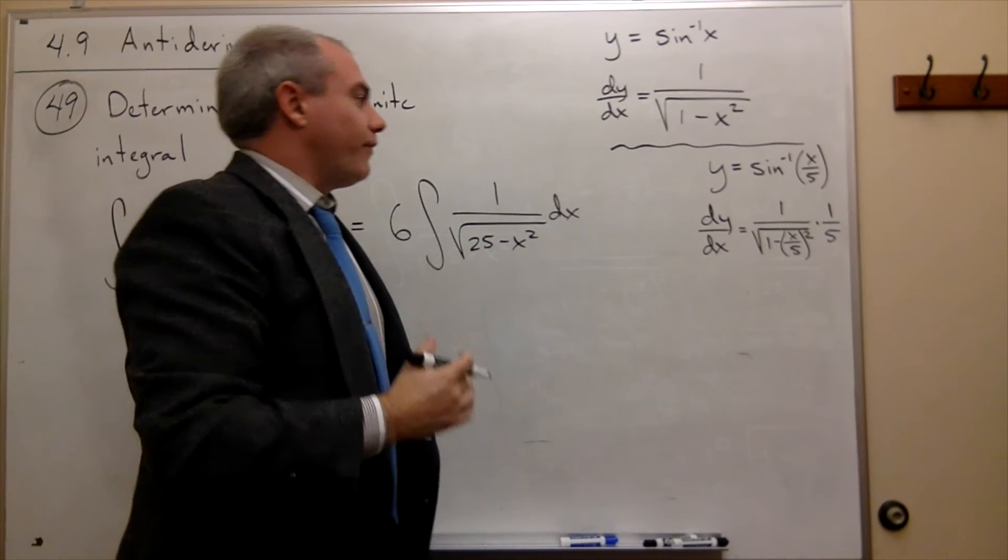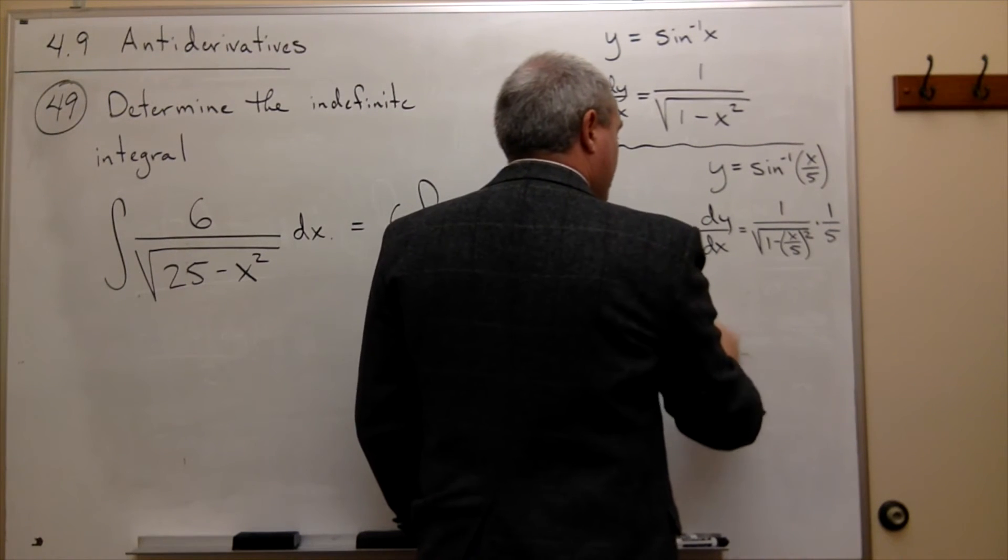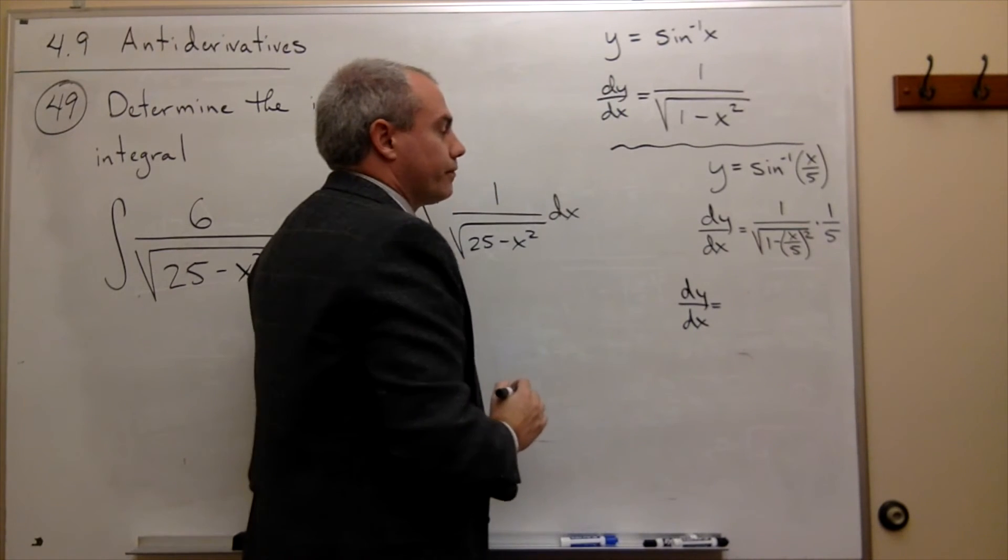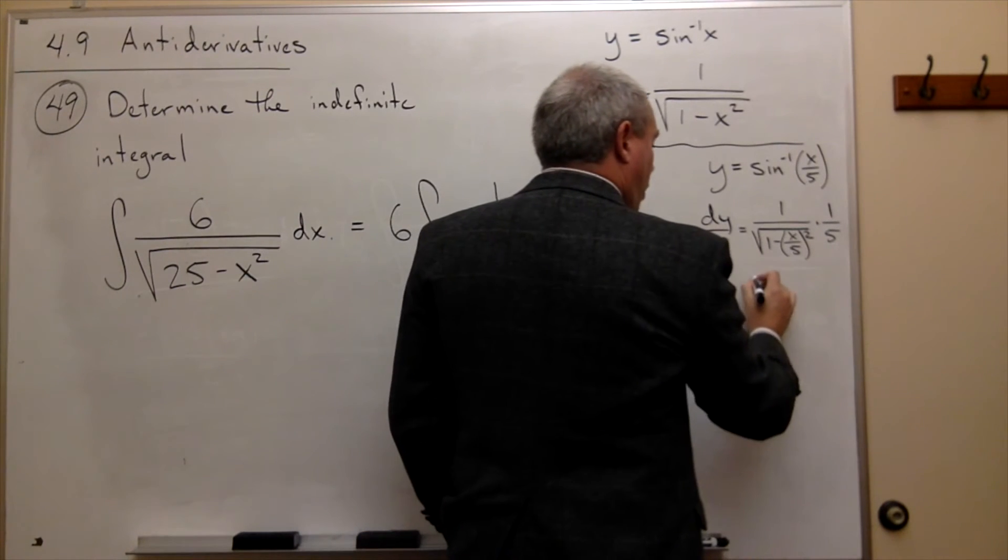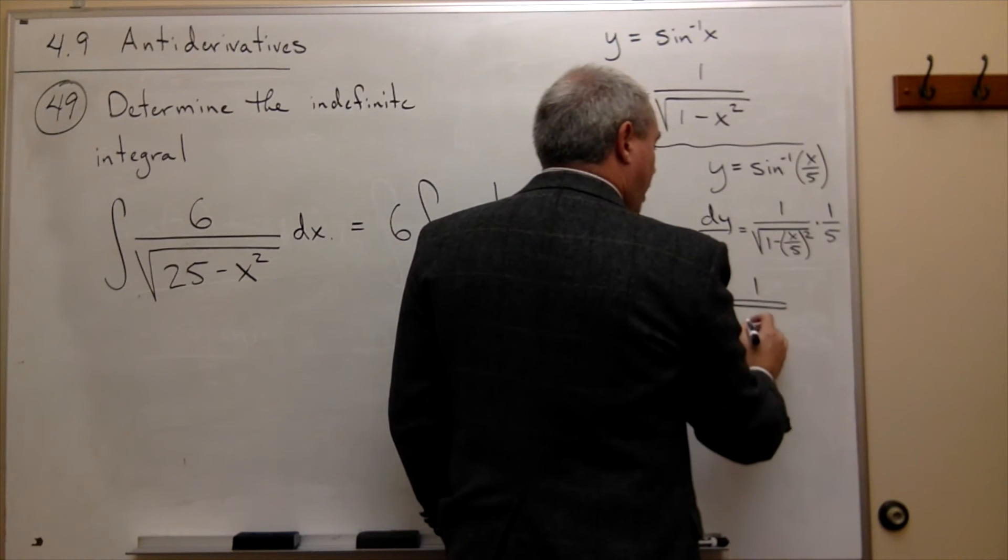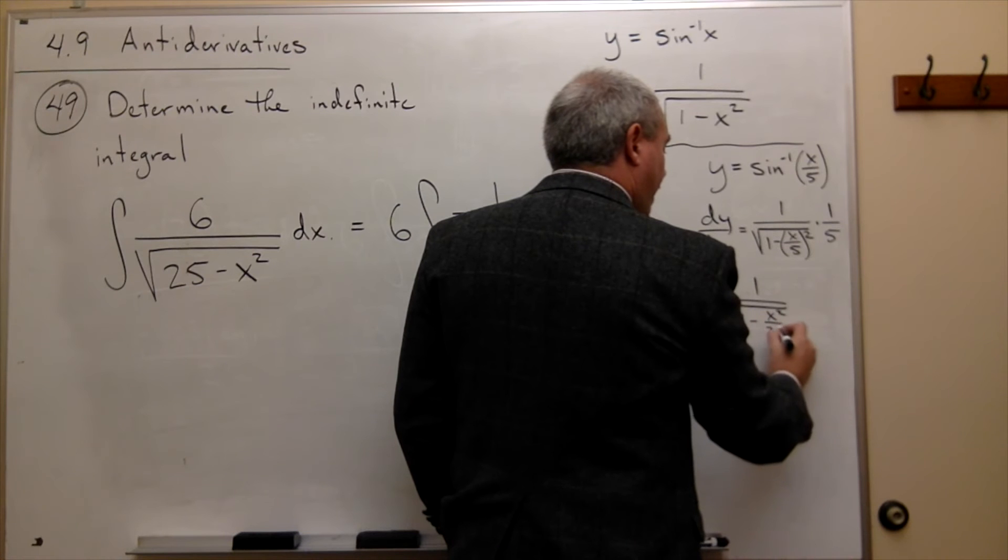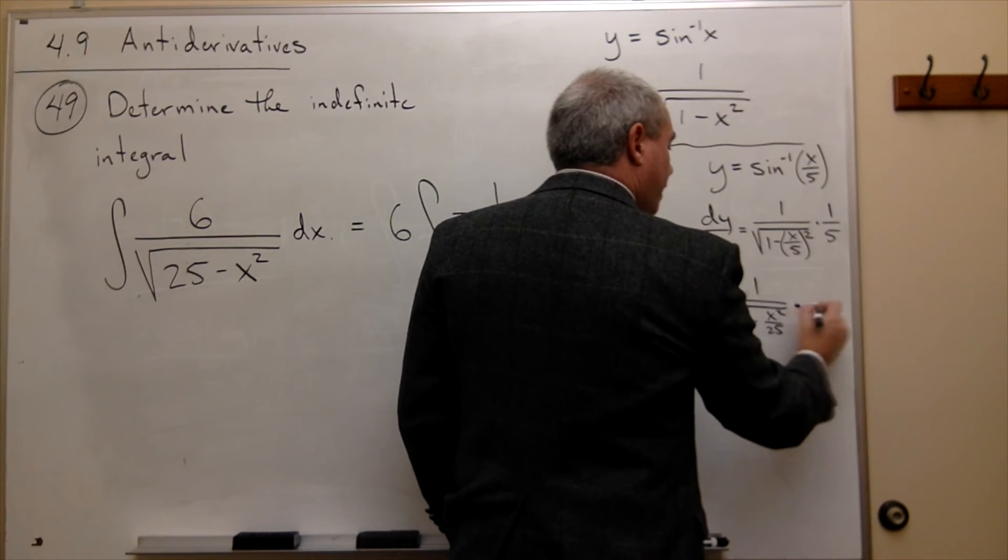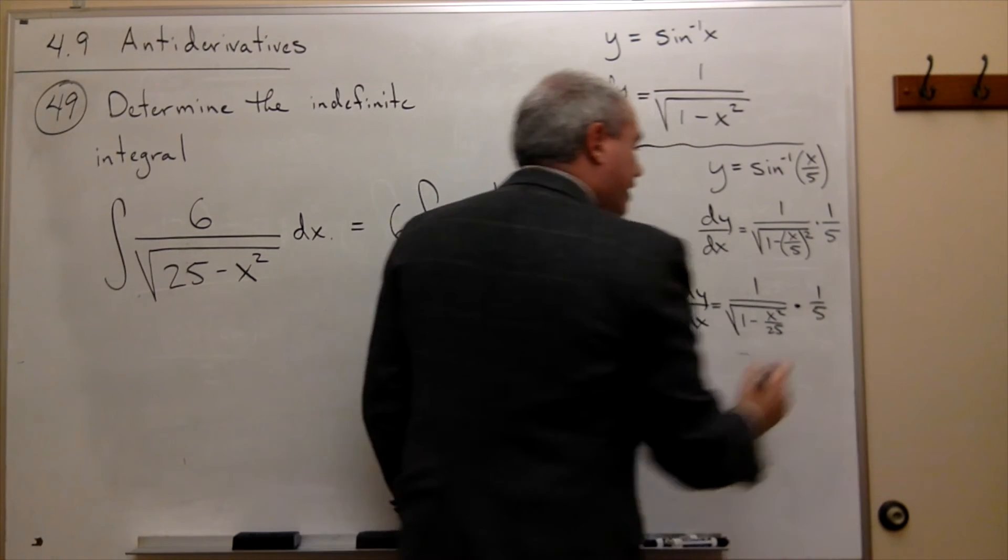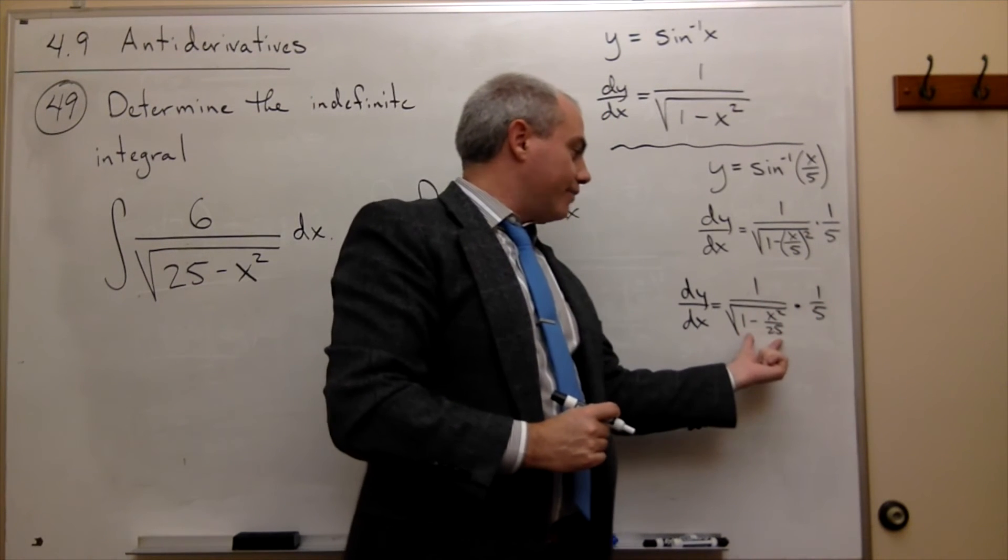Well, let's simplify that a little bit. That says that dy/dx is equal to 1 over, on the bottom I get the square root of 1 minus x squared over 25. But then I need to multiply that by 1 fifth.